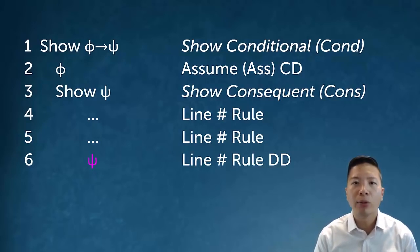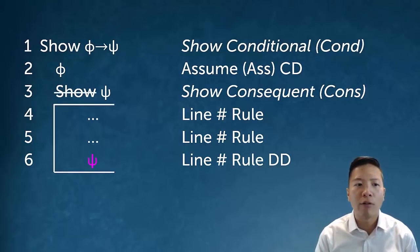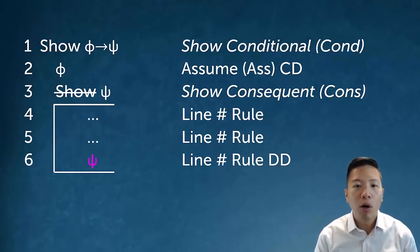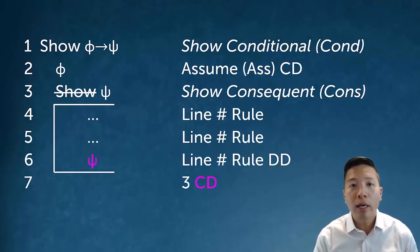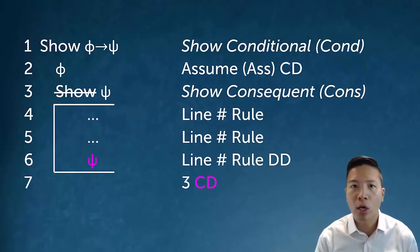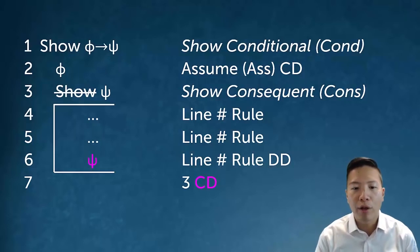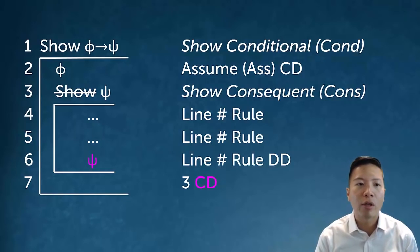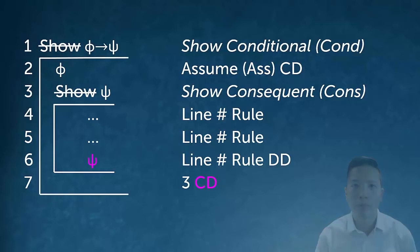Once I show psi, I am able to box it and cross off my show line. How do I close off the entire derivation? On a new line I can say: on line three I successfully showed that the consequent followed, and I showed that the consequent followed from the assumption of my antecedent. Therefore I've finished a conditional derivation. I can box off everything and say I've successfully shown phi arrow psi.